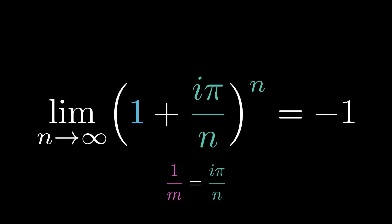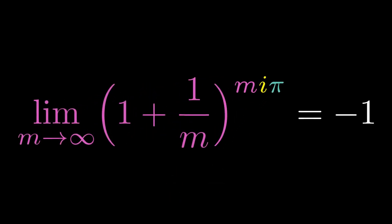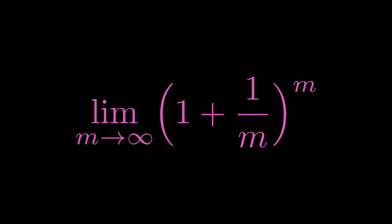Let's clean up the bracket a little bit by using substitution of 1 over m equals i pi over n. Now the expression becomes 1 plus 1 over m to the power of m times i pi. Then we see what happens if we make m larger, which corresponds to wrapping the draggers more tightly around the unit circle.